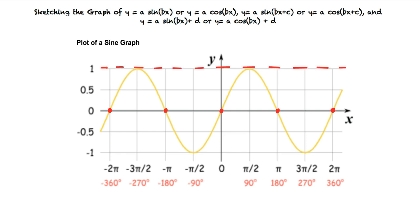It has a maximum of one, which it reaches at negative three pi over two and pi over two. And it has a minimum of negative one, which it reaches at negative pi over two and three pi over two. It is important to memorize this general structure of the sine graph, as it will help us sketch more complicated sine graphs in the future.